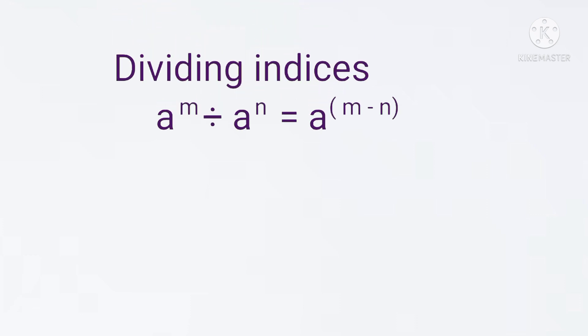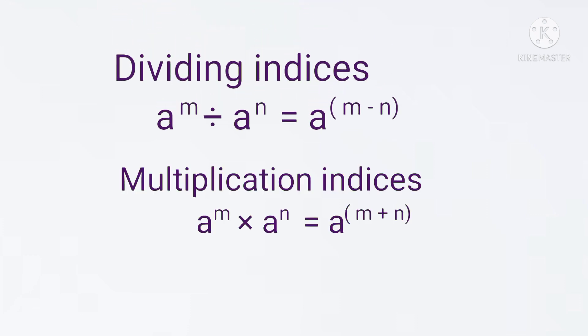Next, dividing: what is happening when we divide? Base equal — divide by the power, subtract the powers. Same as the multiplication rules. In multiplication rules, base equal — add the powers. In division, base equal — subtract the powers.